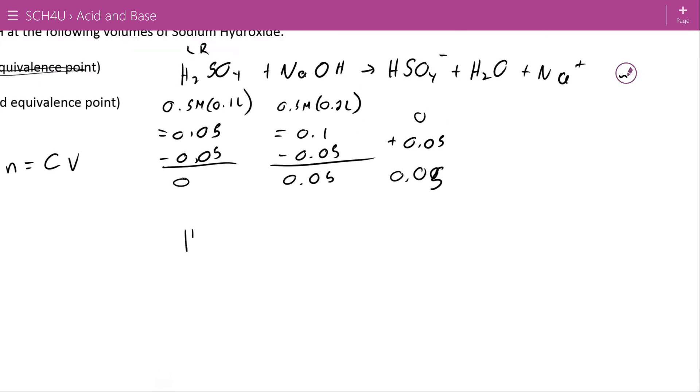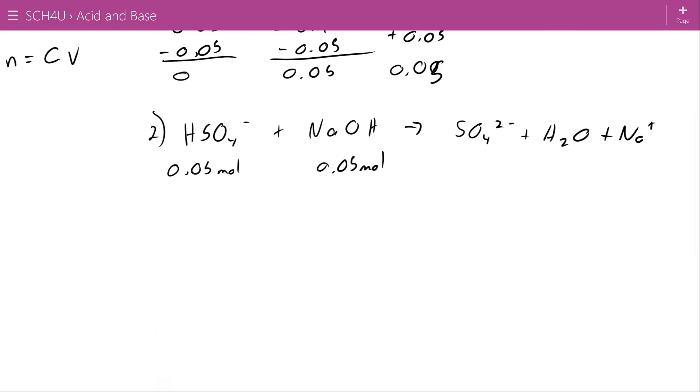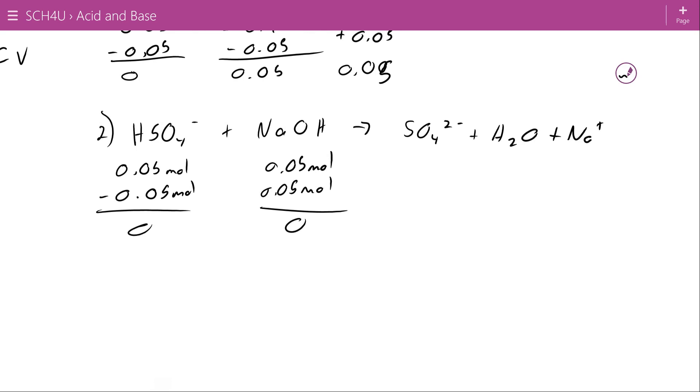Now in the secondary reaction, the HSO4 minus still acting as an acid, reacting with NaOH with its second proton, forming SO4 2- plus H2O plus more sodium that we don't care about. So I got 0.05 molar of this and 0.05 molar of this. And what we can see now is why we call this the second equivalence point. This is reaction one and this is reaction two, we are at equivalence here in reaction two or the second equivalence point.